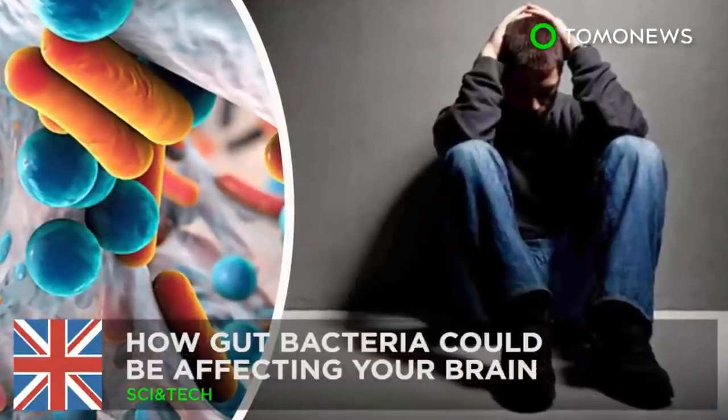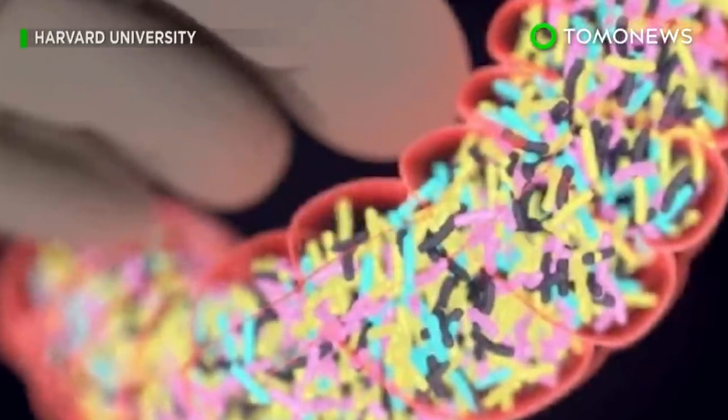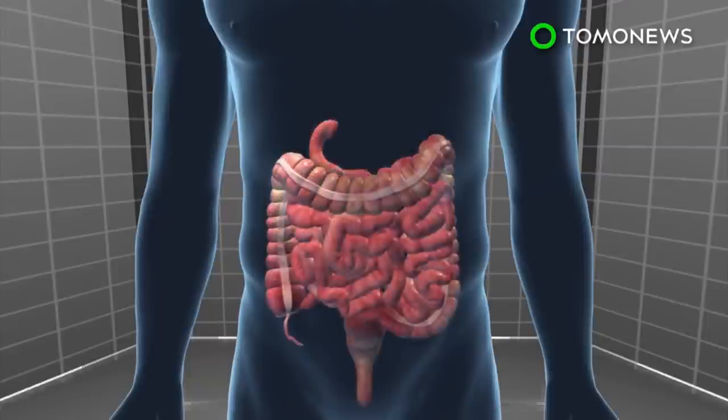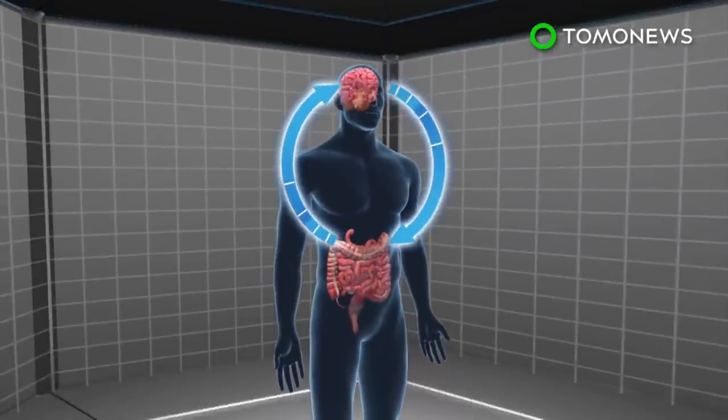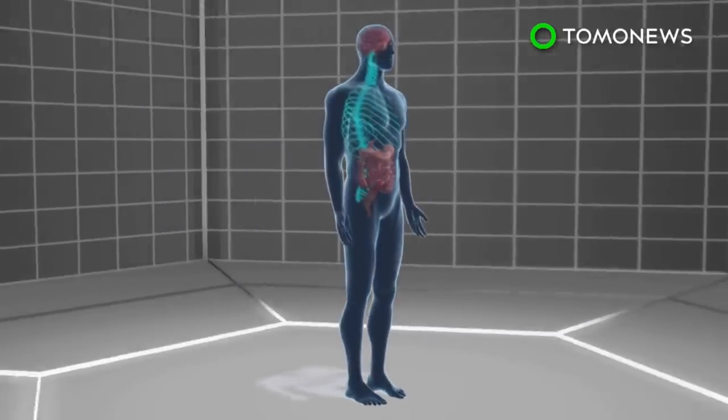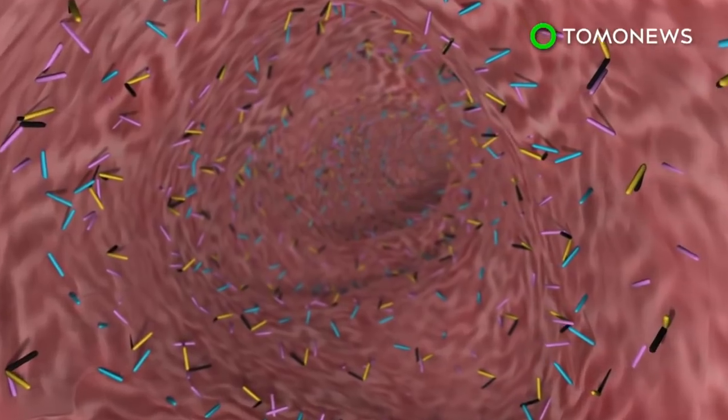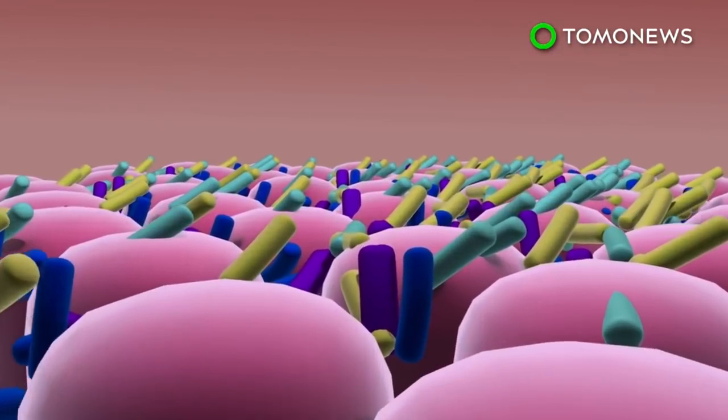How Gut Bacteria Could Be Affecting Your Brain. You ever get a gut feeling about something? Recent studies have been looking at the link between the gut, specifically the microbiome, and its effects on the brain. How could gut microbes be affecting and reaching the brain? One possible route is through the vagus nerve, the connection between the brain and the gut. Another possibility is that gut bacteria break down fiber into short-chain fatty acids that can have effects throughout the body.